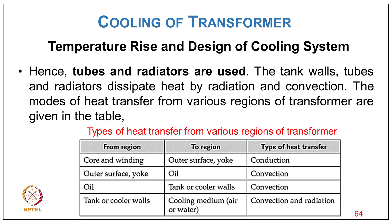Modes of heat transfer in a transformer: from core and winding to outer surface/yoke by conduction; from outer surface/yoke to oil by convection; from oil to tank/cooler walls by convection; from tank/cooler walls to cooling medium (air or water) by convection and radiation. So cooling involves conduction, convection, and radiation.